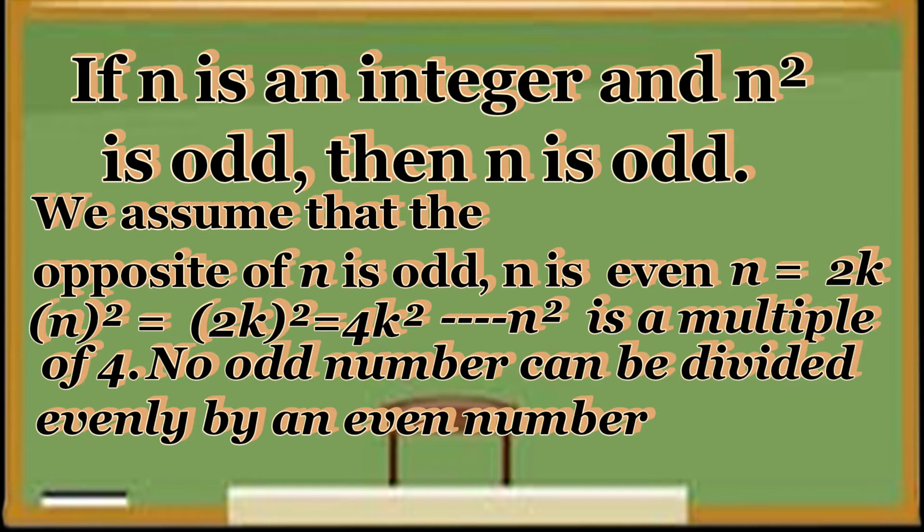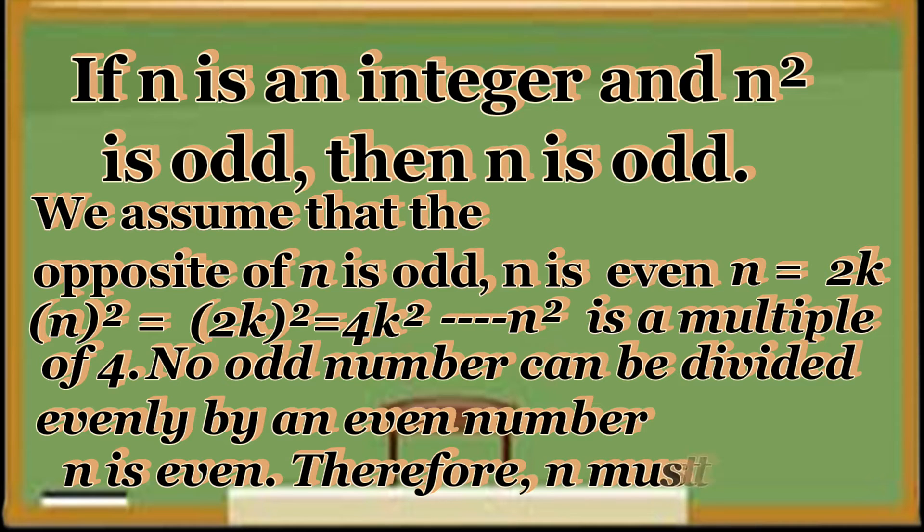So this contradicts our assumption that N is even. Therefore, N must be odd if N squared is odd.